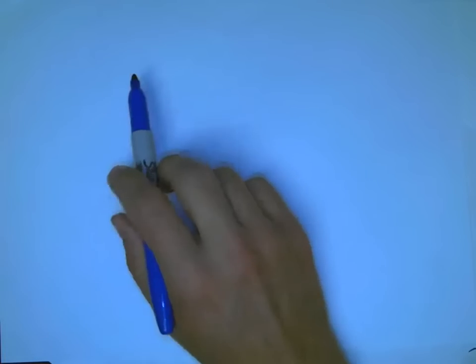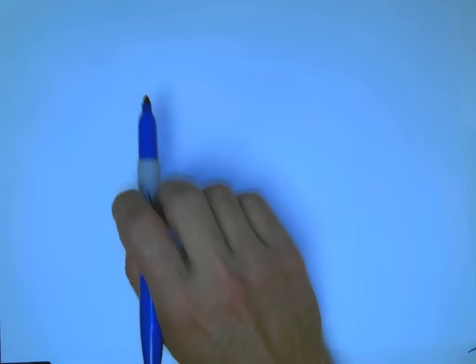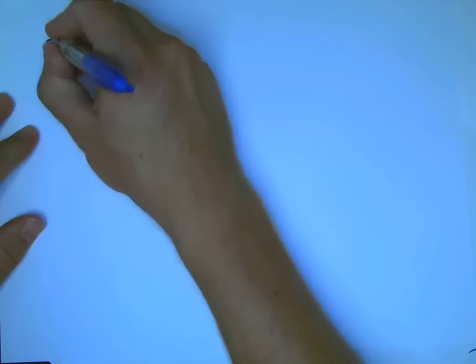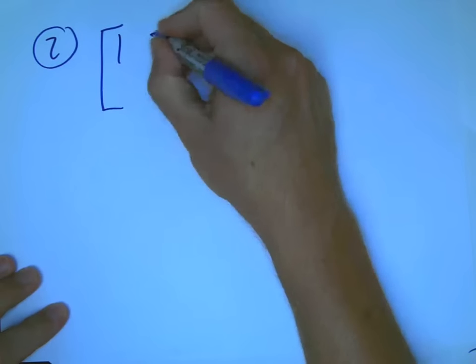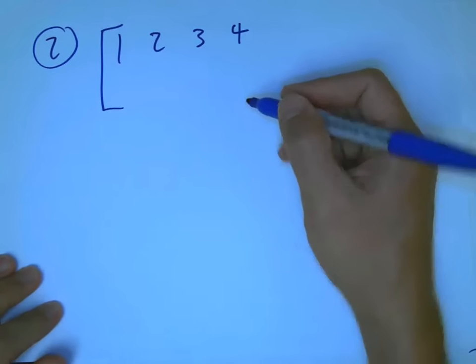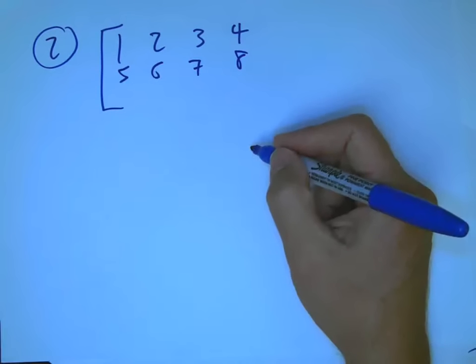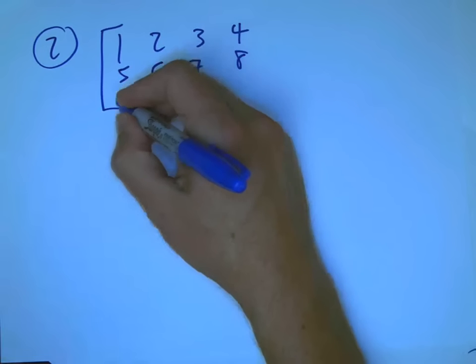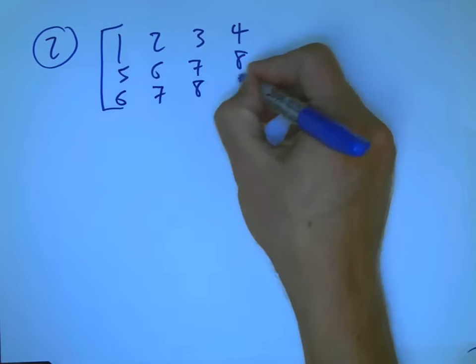Another example of using row reduction to solve a system, starting with the augmented matrix. Example number 2. So, say it's x plus 2y plus 3z equals 4, 5x plus 6y plus 7z equals 8, and 6x plus 7y plus 8z equals 7.